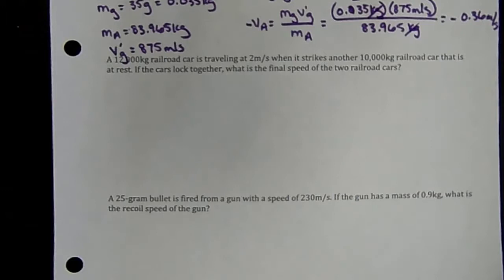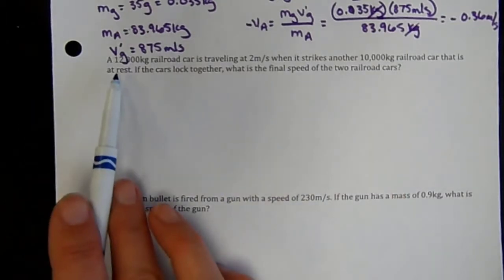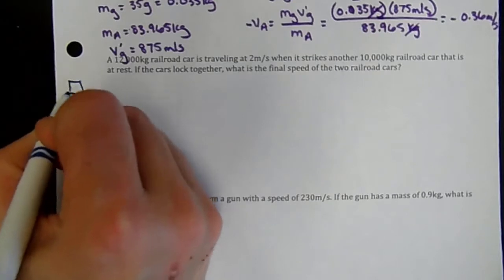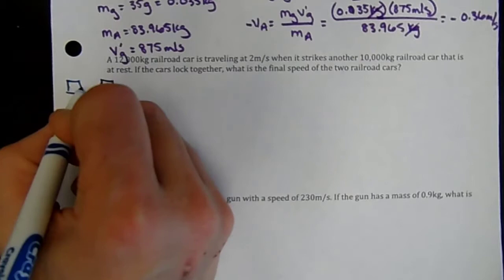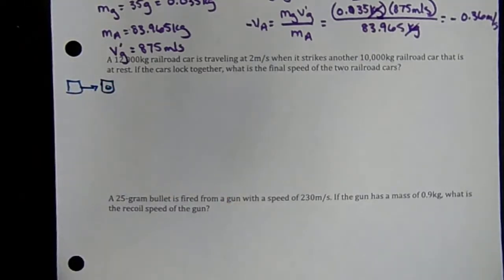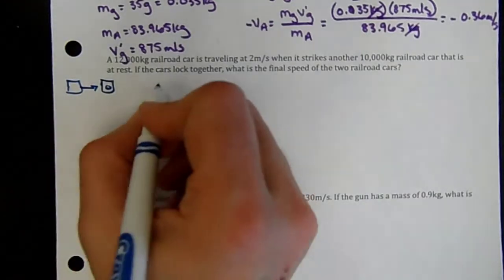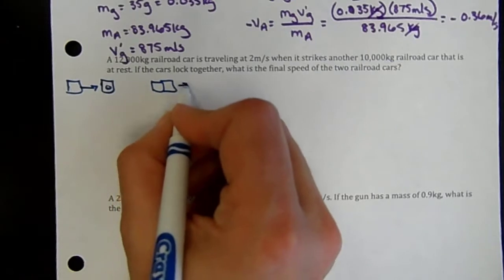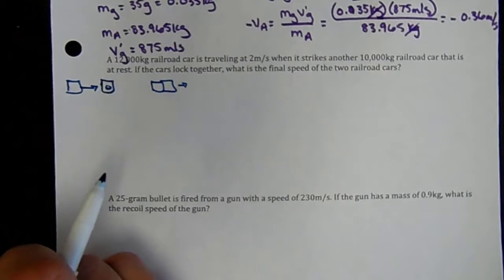In the next problem, a 12,000-kilogram railroad car traveling at 2 meters per second strikes a 10,000-kilogram railroad car at rest. They stick together after the collision. So in the initial state one car is moving and the other is stationary; after the collision both are stuck together moving at some final velocity, presumably in the same direction as the first car.